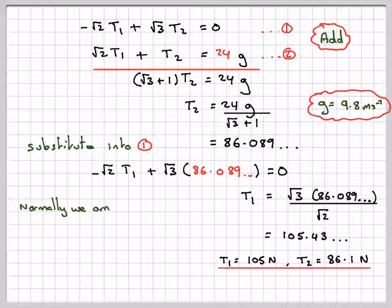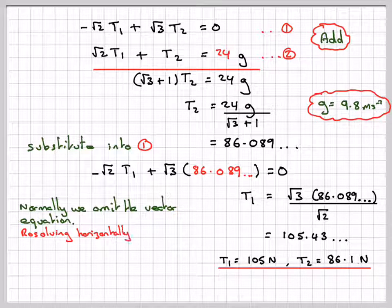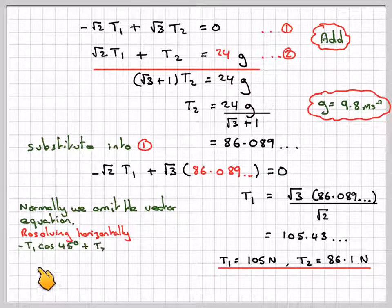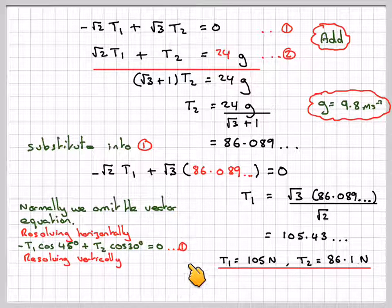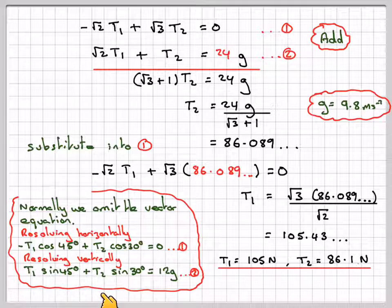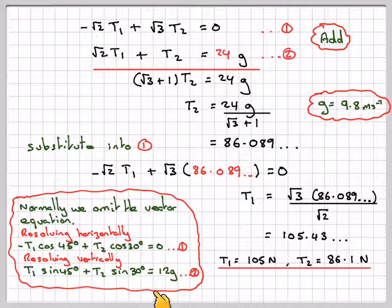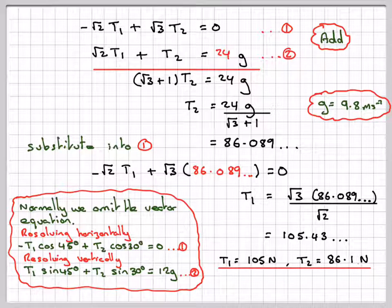Now we might have straight away written it down like this rather than using vector equations. If we resolve horizontally, then we would have minus T1 cos 45 plus T2 cos 30 equals 0 for equation 1. And then if we resolve vertically, then we have T1 sin 45 plus T2 sin 30 is going to have to equal 12G as equation 2. And then we go through the same procedure as we've done here.